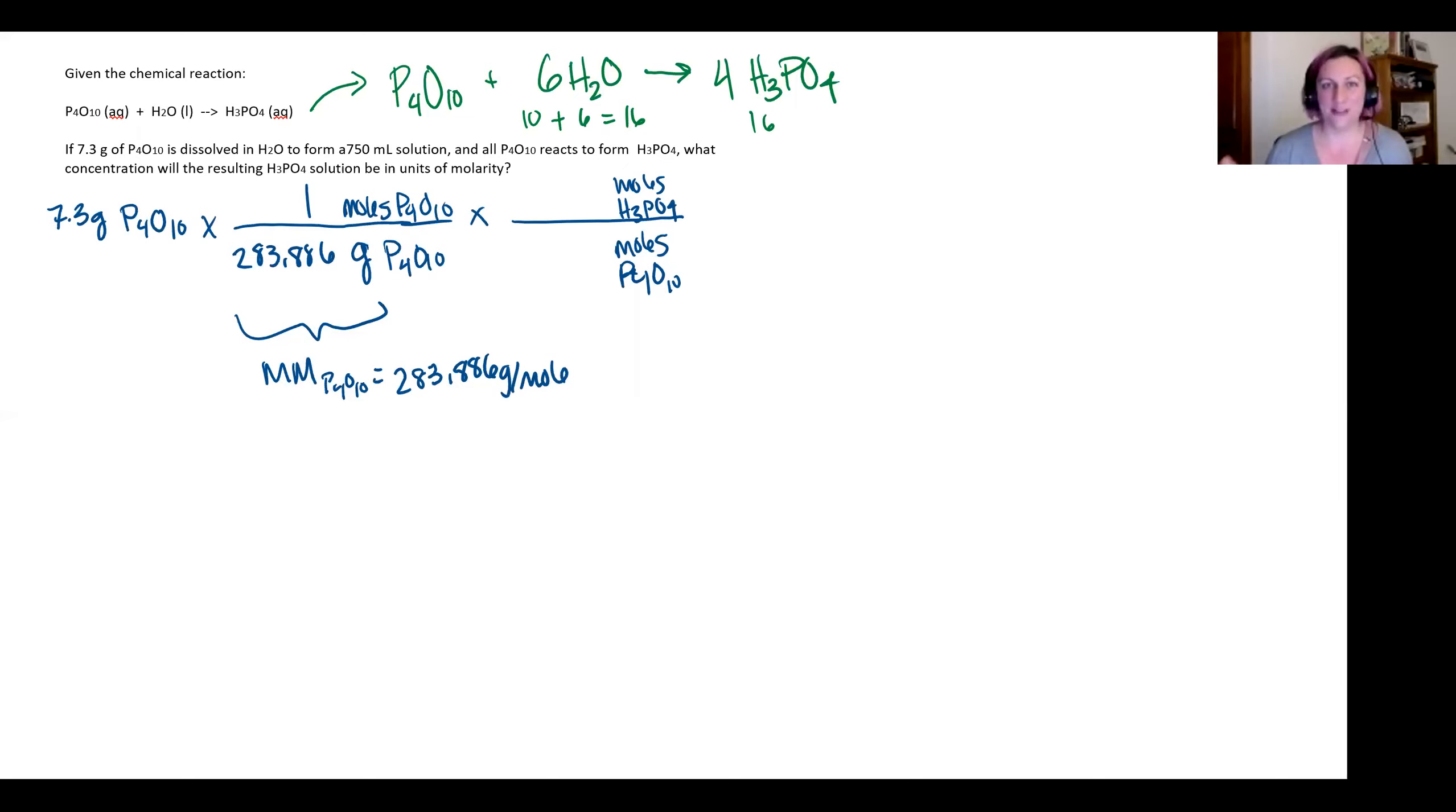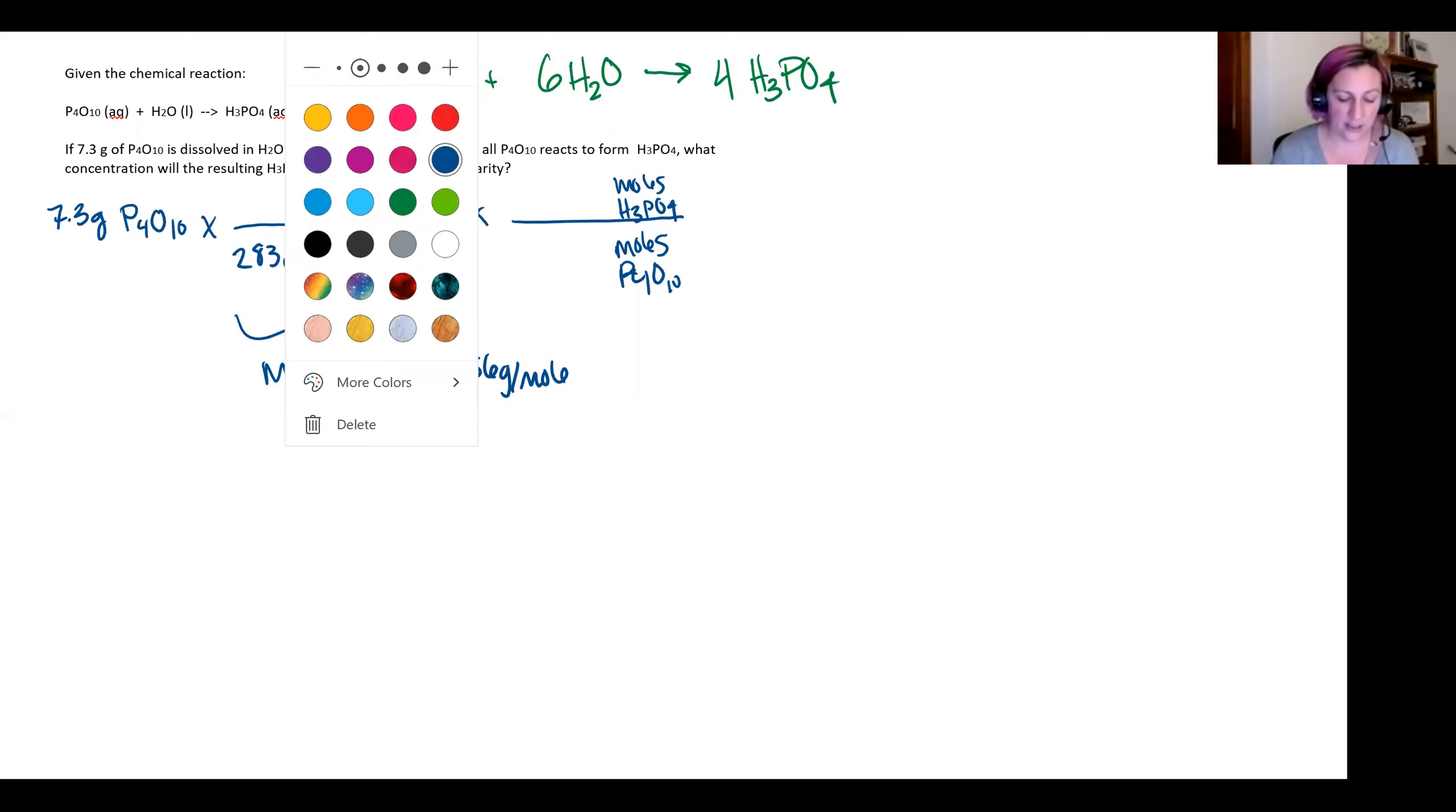Now looking at my products, I have four phosphates and each phosphate has four oxygen. So four times four is 16. They're already balanced, which is nice. So I will have a mole ratio of my P4O10 to my phosphate of one to four. I'll go ahead and put in that one and that four here.